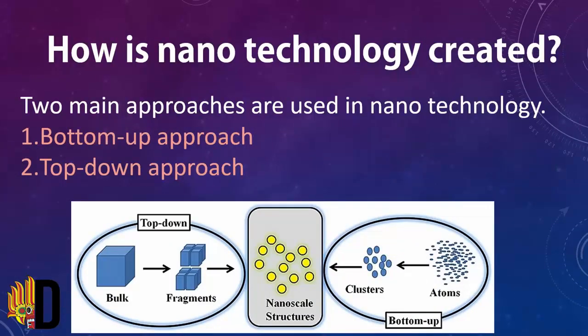Now we see how nanotechnology is created. There are two main approaches used in nanotechnology. The first one is bottom-up, and the second one is top-down. In the bottom-up approach, materials and devices are built from molecular components. In the top-down approach, they are constructed from larger entities without atomic level control.